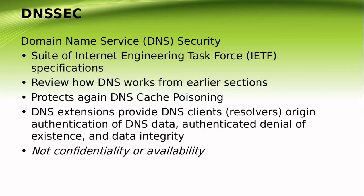To properly validate the path, DNSSEC must be implemented at each domain level. The higher organization level signs the key of the lower domain level. For example, using www.google.com: the root level signs the .com key, and the .com level signs the google.com key. DNSSEC follows the chain of trust from the lowest level domain to the top level domain, validating the key at each level along the way.